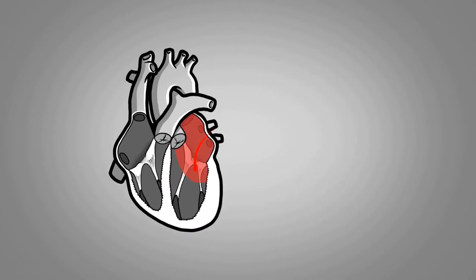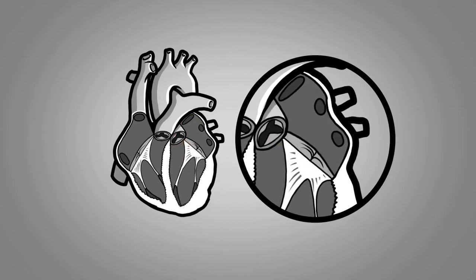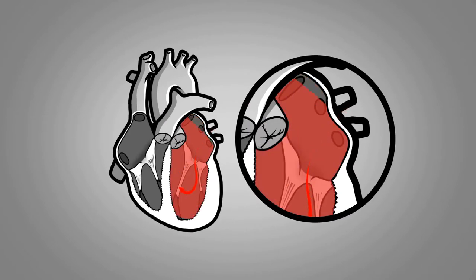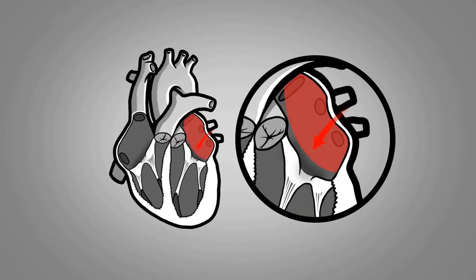When the mitral valve closes normally, the edges of each leaflet align and form a seal. The corda tendinia holds the leaflets in place and prevents them from folding too far up in the left atrium.